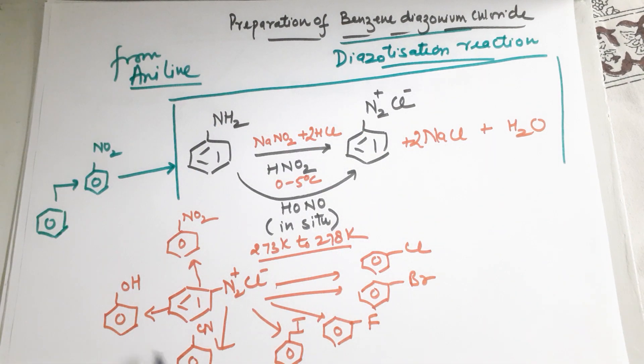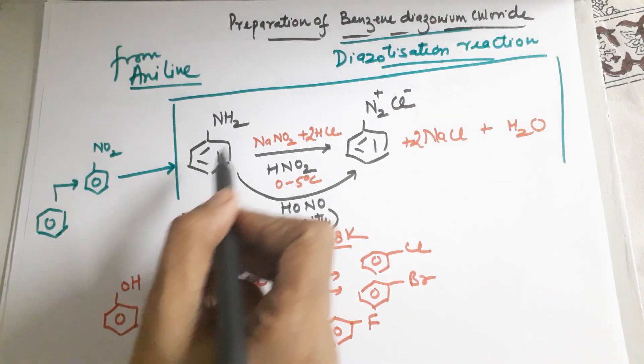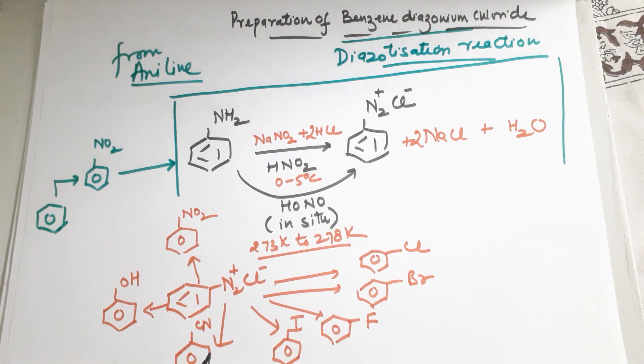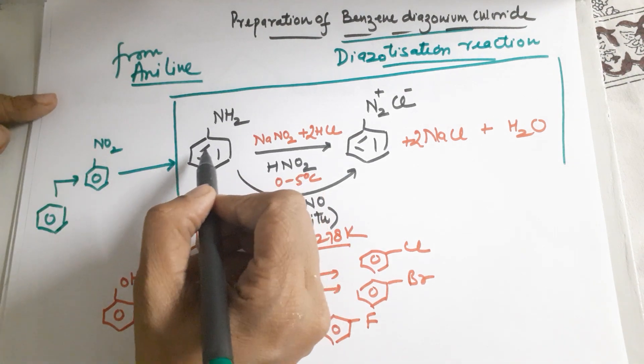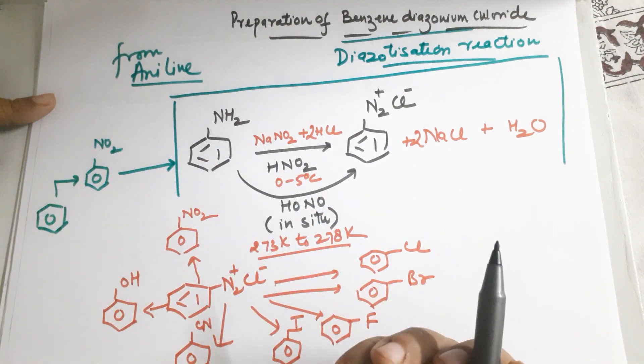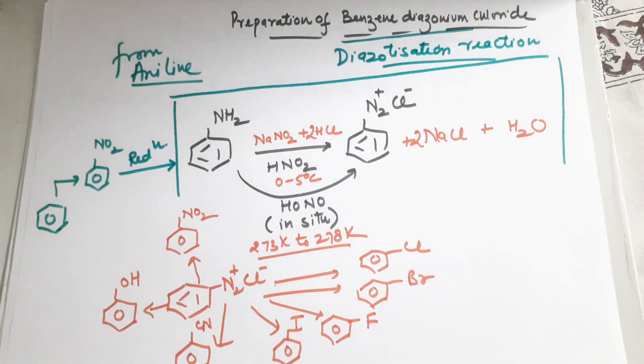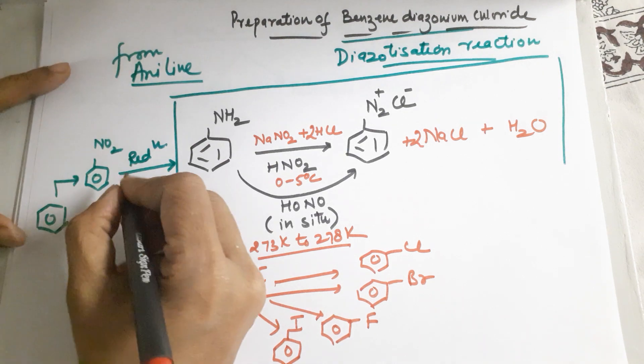After nitrobenzene is formed, we need to make aniline. This route is feasible for any conversion. We need to remove oxygen and add nitrogen, so we're talking about reduction. The best, cheapest, and most sustainable route for reduction is iron in HCl.